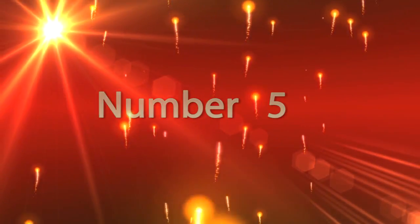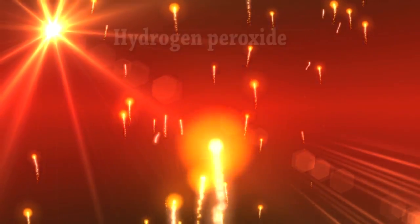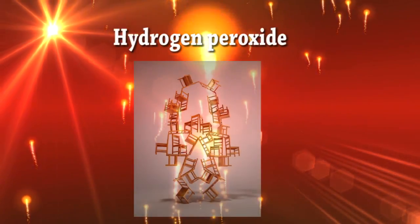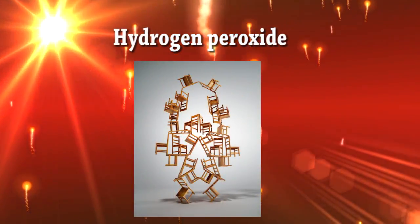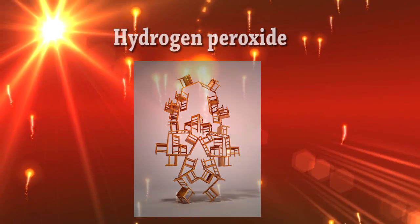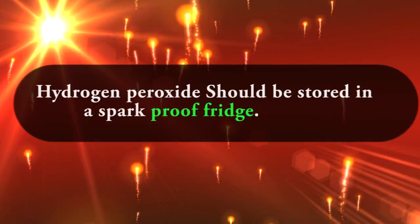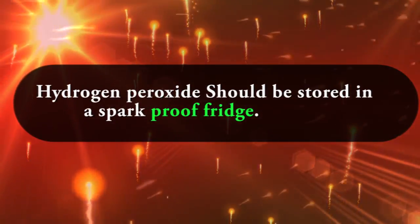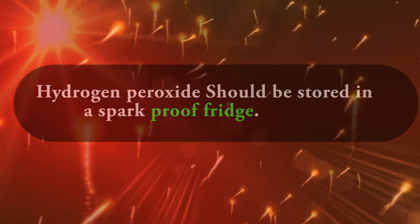Limitation Number 5: Hydrogen peroxide is unstable and should be stored in a spark-proof fridge. Avoid any undue exposure to light.